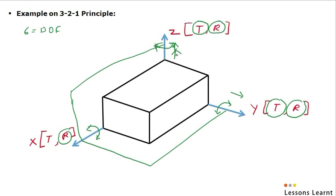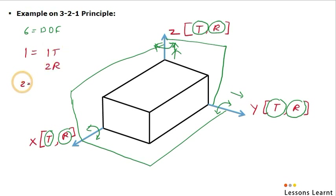Now we have to put the third plane. We consider this as the third plane, and then we can see the translation in X is locked. When we summarize: when we used the first plane, we locked one translation and two rotations. When we used the second plane, we locked one translation in Y direction and one rotation in Z direction. And when we used the third plane, we locked the final translation. In this way, the 3-2-1 principle is used.